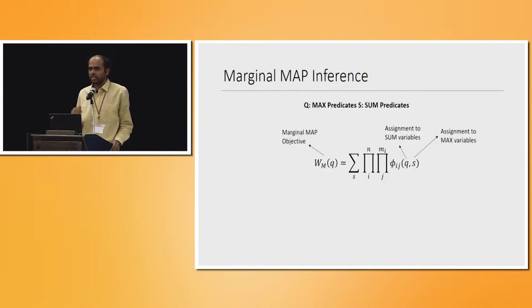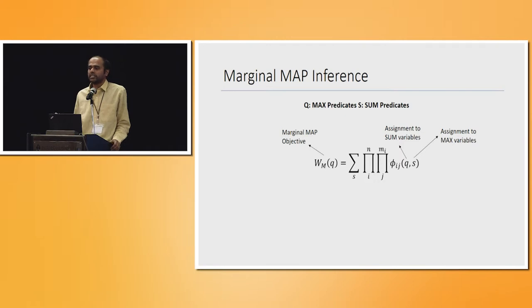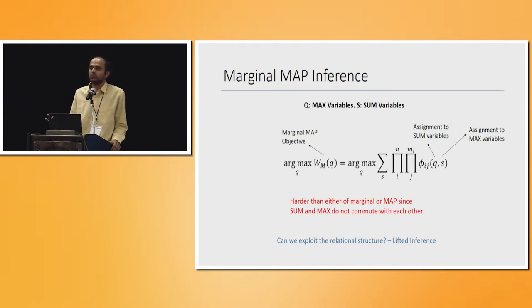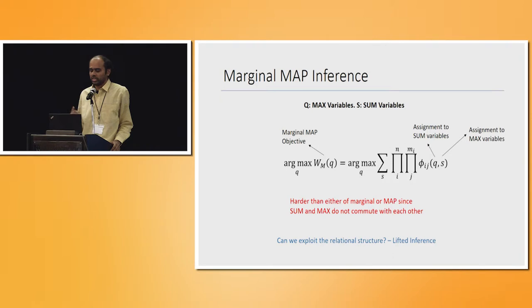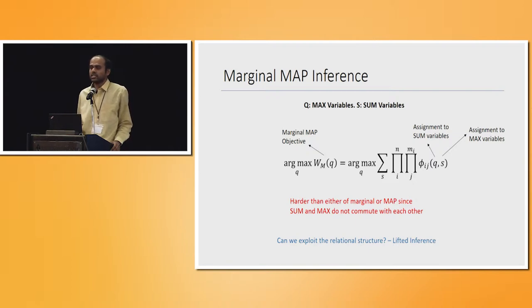The task we're interested in is marginal MAP inference. We divide the set of predicates into max predicates Q, over which we want to maximize, and sum predicates S, over which we sum. The marginal MAP objective takes the distribution, sums over assignments to the sum predicate groundings, and then maximizes over the Q variables. We can drop the normalization constant Z since it doesn't affect the argmax. This is a fairly hard problem because the sum and the max don't commute, making it harder than both marginal and MAP inference. The question is: can we exploit lifting or symmetries to solve this more efficiently?